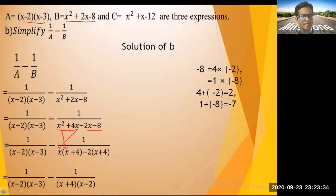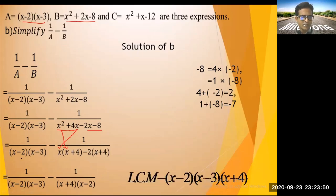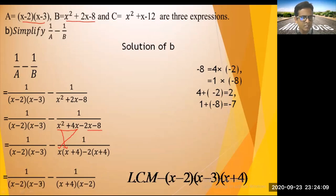The LCM of (x - 2)(x - 3) and (x + 4)(x - 2): (x - 2) appears once in each, (x - 3) once in the first, (x + 4) once in the second. So LCM = (x - 2)(x - 3)(x + 4).